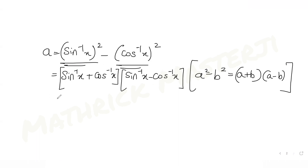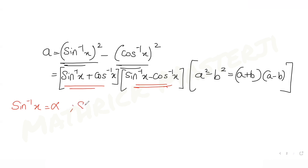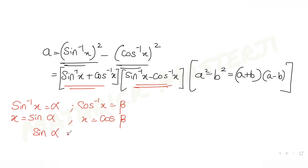Now let's understand what sin⁻¹x + cos⁻¹x becomes. If I say sin⁻¹x is α and cos⁻¹x is β, then x = sin α and x = cos β. Since both right-hand sides equal x, I can equate: sin α = cos β.